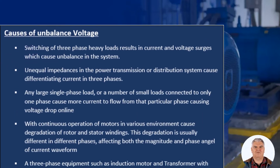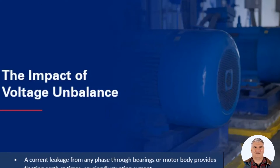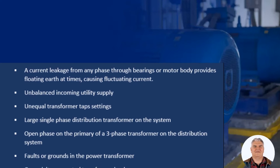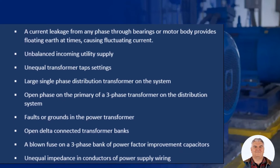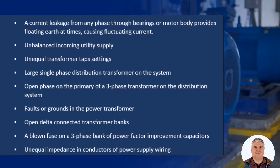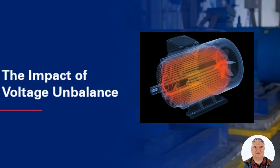Switching of three-phase heavy loads results in current and voltage surges. Any large single-phase load, or a number of small loads connected to only one phase, cause more current to flow from that particular phase causing voltage drop on line. And even an unbalanced distribution of single-phase loads such as lighting and more will affect phase balance. With an unbalanced system, you may have more motor failure over the years costing additional maintenance and replacement costs because of overheating. Extra loss due to voltage imbalance will heat the motor windings, and by increasing the operating temperature of the motor leads to the breakdown of winding insulation causing motor failure. The voltage unbalance of just 3% increases the heating by 20% for an induction motor.